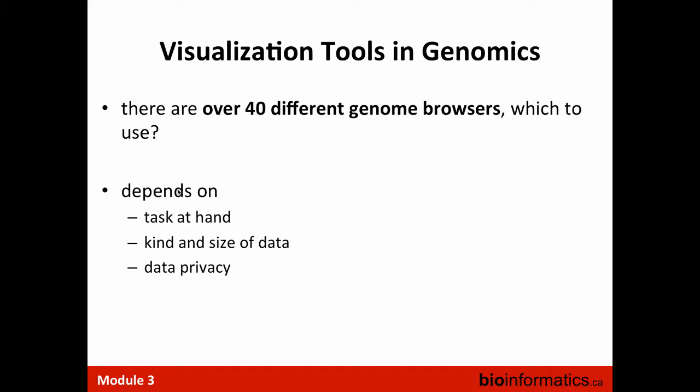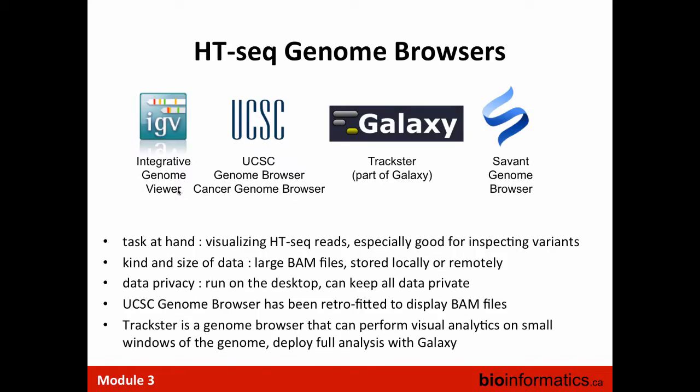I counted 49 different genome browsers built by different teams for different purposes. Most of them solve the core challenge of being able to interactively look at various types of high-throughput data in the context of a reference genome. That genome can be human, mouse, fly, or pathogens — and there are actually specific browsers for facilitating pathogen analysis. If the task at hand is visualizing alignments to the genome, inspecting variants, and all the things we're going to look at today, genome browsers are a great tool. They can handle large files stored either locally or remotely, and they can keep that data private.